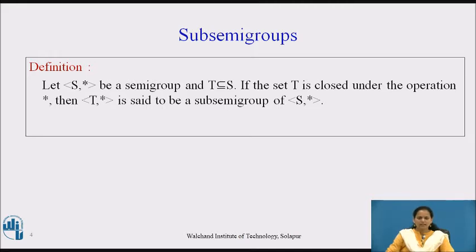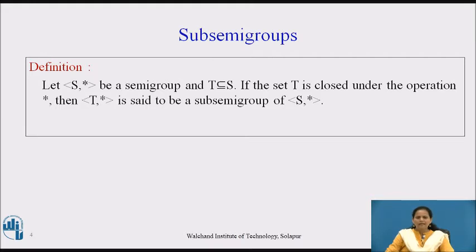Let us discuss the definition in detail. We have S as any set and * as any operation. To define a sub-semi-group, we have a new set T which is a subset of the given set S. T is closed under the operation *, meaning that whenever we perform the operation * on any two operands from the set T, the result also belongs to the same set T.